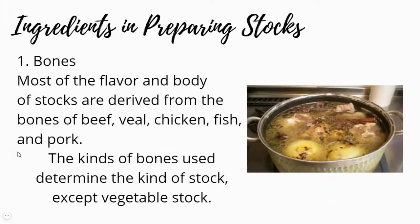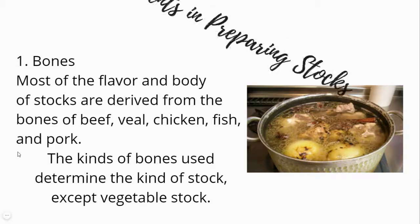Ingredients in preparing stock. Traditionally, stock is made by simmering various ingredients in water. A newer approach is to use a pressure cooker. The ingredients may include some or all of the following. 1. Bones: Most of the flavor and body of stocks are derived from the bones of beef, veal, chicken, fish, and pork. The kinds of bones used determine the kind of stock, except vegetable stock.